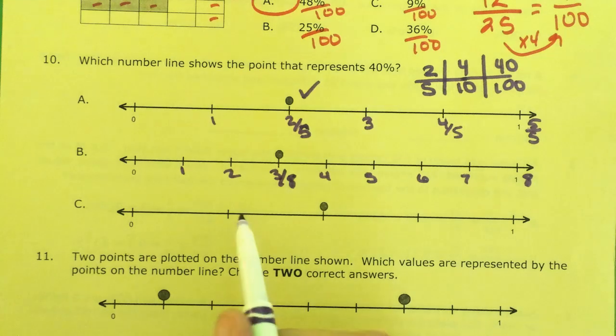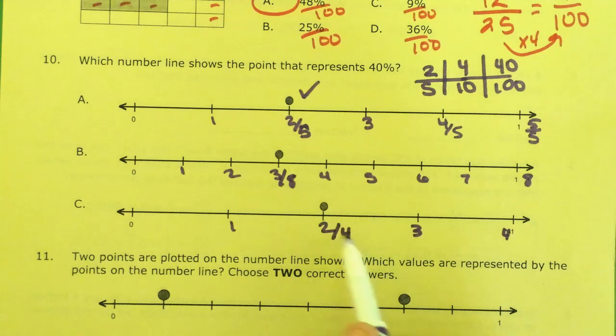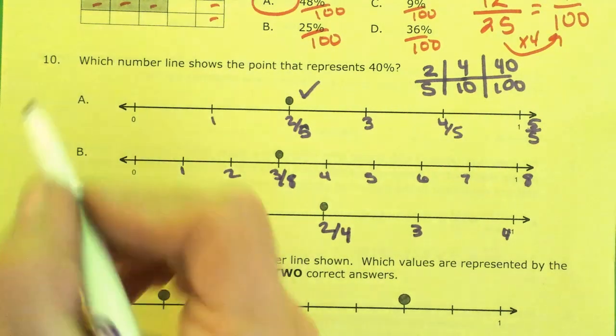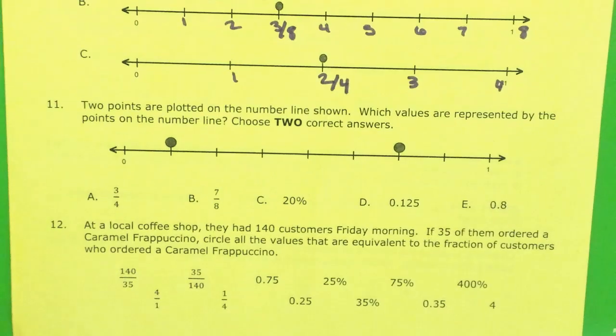Let me check C. Here's 1, 2, 3, and 4. So this is 2 out of 4. That's half. That's 50 percent. So A is the winner.